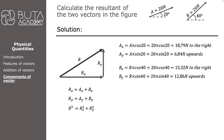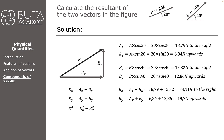Now we can calculate RX and RY. RX is the sum of AX and BX: 18.79 plus 15.32 equals 34.11 N to the right. RY is the sum of AY and BY: 6.84 plus 12.86 equals 19.7 N upwards. Finally, we use Pythagoras' theorem: R squared equals RX squared plus RY squared, giving 34.11 squared plus 19.7 squared. Solving this equation, the resultant equals 39.39 N.